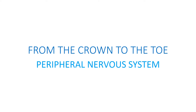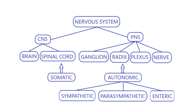From the crown to the toe — peripheral nervous system. The nervous system provides the integrated functioning of all organs and systems of the body and its interaction with the external environment.